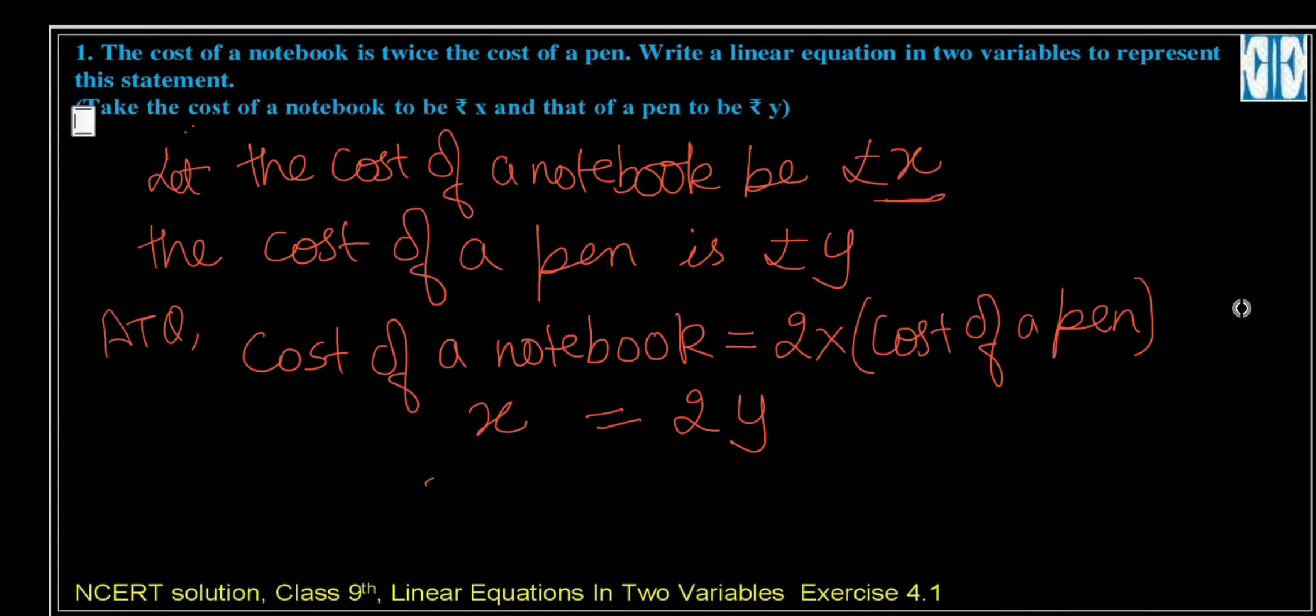And 2y we will take to this side, so x minus 2y equals 0. Okay, so this is your linear equation in two variables.